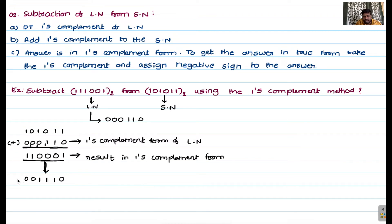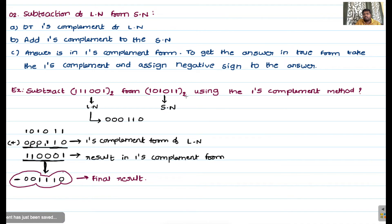Assign a negative sign to this answer, because we are subtracting a larger number from a smaller number, so the result is definitely negative. This is your final result: −001110. To summarize: determine the one's complement of the larger number, add it to the smaller number, take the one's complement of the result, and assign a negative sign.